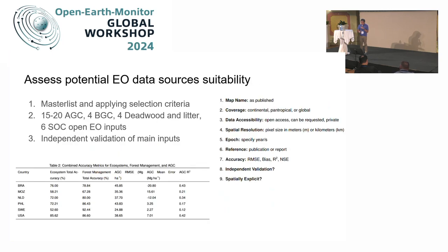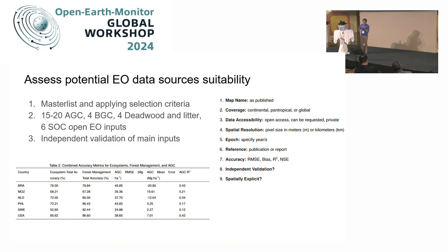We did a review of what could be available and useful, using some criteria and variables we were able to consider. We were able to list around at most 20 above-ground biomass carbon data sources. There are also available below-ground biomass carbon maps — most of them recently published — and a basis for deriving deadwood and litter, and of course soil organic carbon as well.